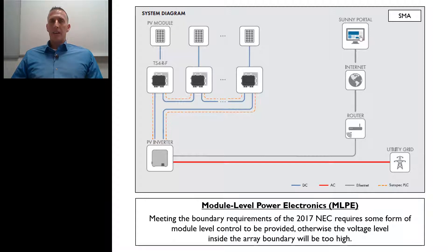This is where we're looking at possibly the higher increased use of AC modules, or it could be microinverters, or it could be the DC to DC converters. And so just keep in mind that meeting the boundary requirements of the 2017 NEC is going to require some form of module level control to be provided. Otherwise, the voltage levels inside the array boundary will just be too high.